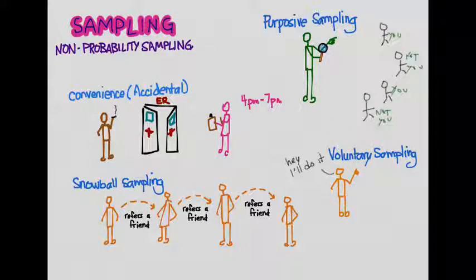What you'll see that is common among all of these non-probability sampling techniques is that there is no randomness involved. Usually it's just people either picking because of the time of day, someone telling their friend to join, or the researcher is picking on their own, or letting the person pick. And so the samples are not random.